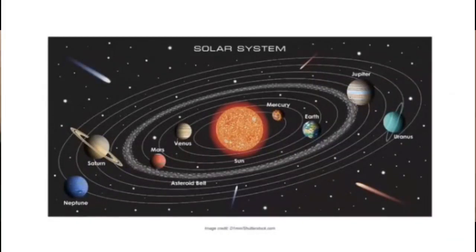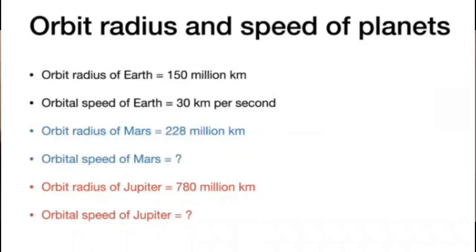Here's the solar system. Since the planets are executing circular motion, including the Earth, we can ask some basic questions about the orbit. How big is the orbit radius of the Earth — that means how far away is the Sun from the Earth? And what's the speed — how fast does the Earth go around the Sun? The orbit radius of the Earth is 150 million kilometers and the orbital speed is 30 kilometers per second. Now let's take Mars. Given its orbit radius, can you figure out how fast Mars goes? That's the question.